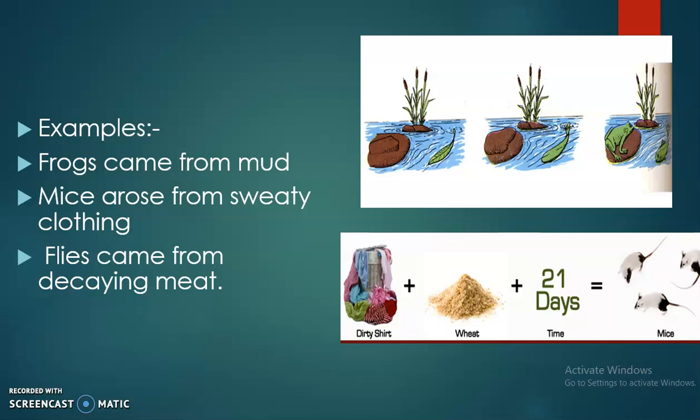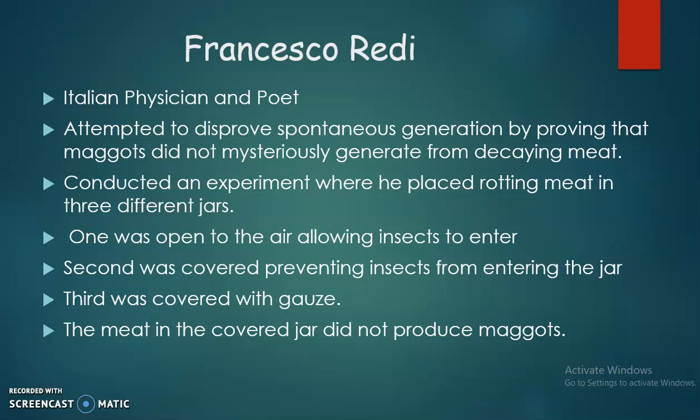Many experiments were conducted for disproving the spontaneous generation theory. The first experiment was conducted by Francisco Redi. He was an Italian physician and poet, and he attempted to disprove the spontaneous generation theory by conducting an experiment using decaying meat.